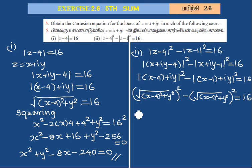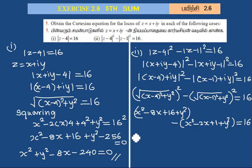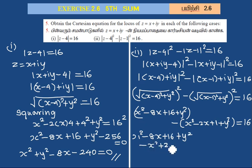Expanding x minus 4 squared: x squared minus 8x plus 16 plus y squared. Then expanding x minus 1 squared: x squared minus 2x plus 1 plus y squared. Subtracting the second expansion from the first: x squared minus 8x plus 16 plus y squared minus x squared plus 2x minus 1 minus y squared equals 16.